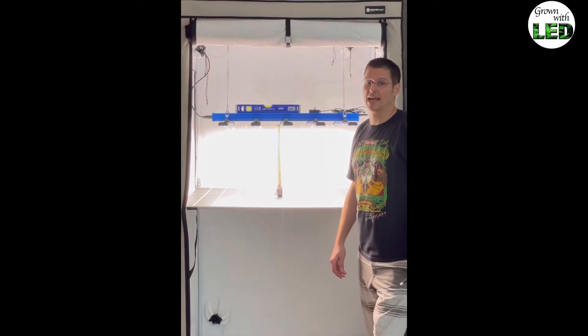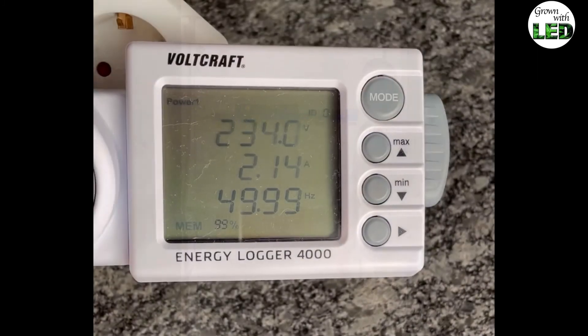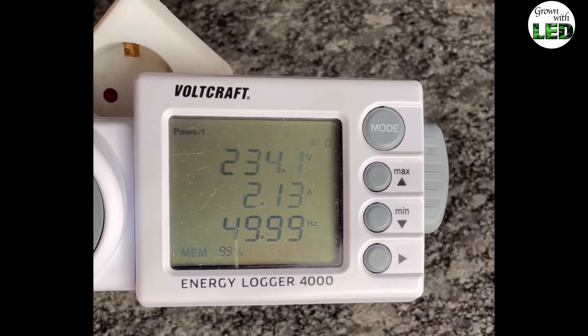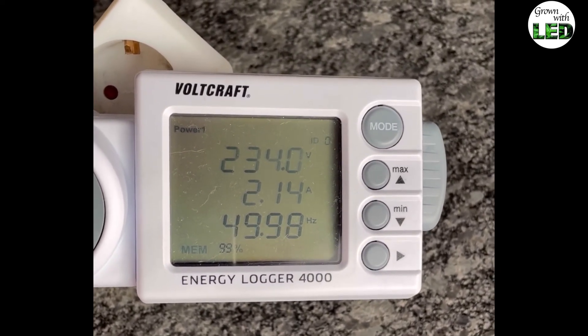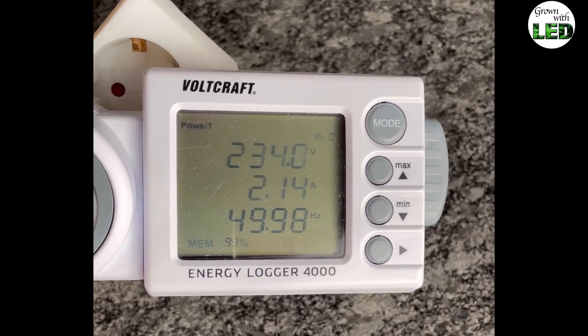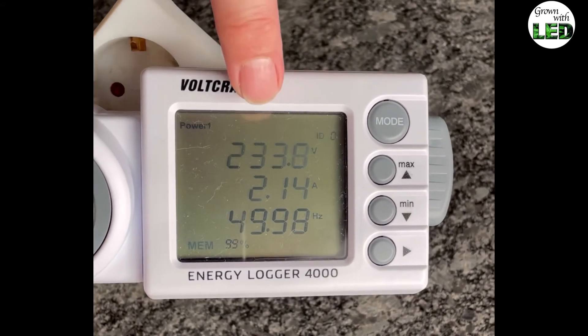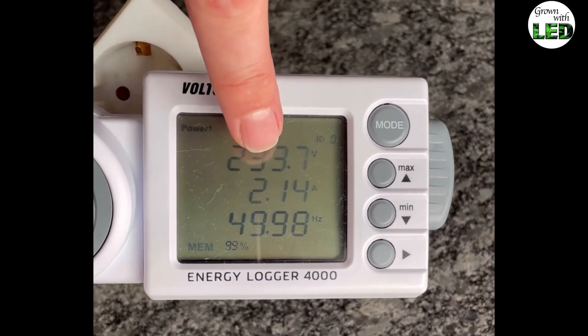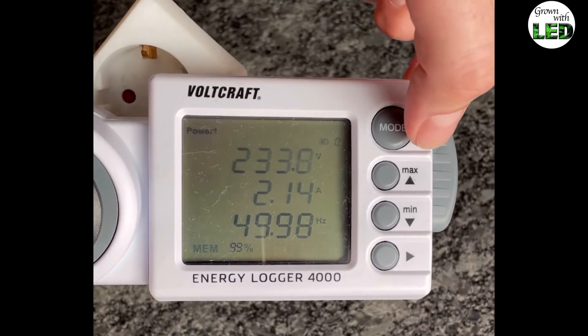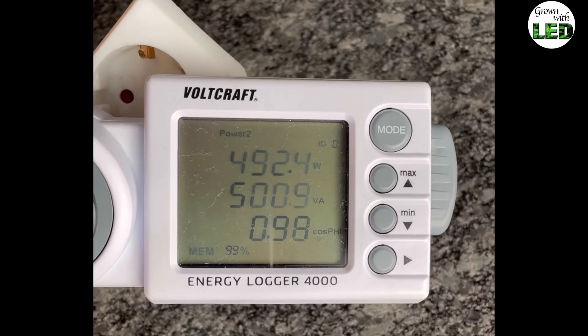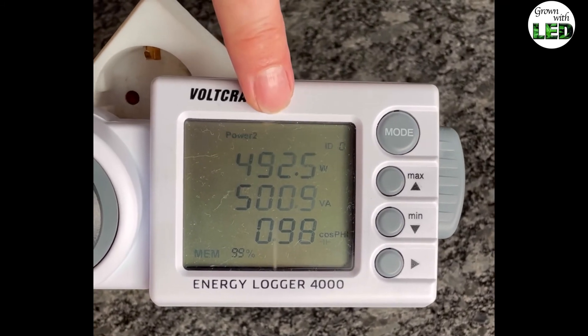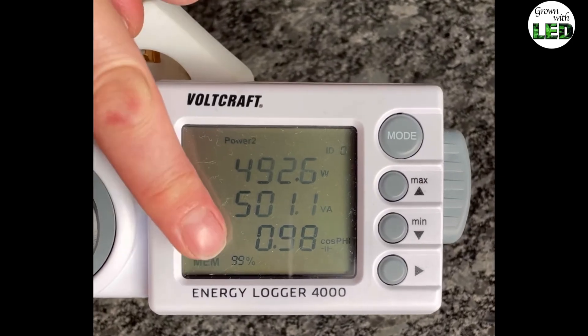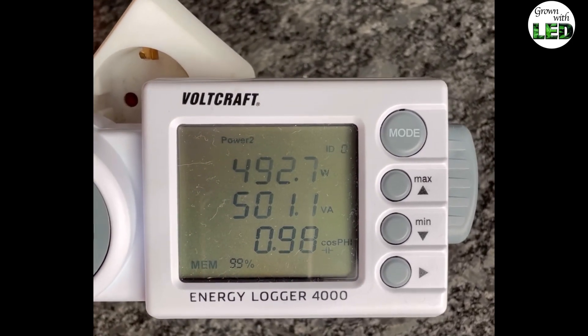Here we have the power measurement of the actual power consumption of the MaxiBright Daylight LED 480 Watt Pro. At a voltage of 233.9 volts, she draws a current of 2.14 amps and therefore uses a power of 492.5 watts. That's 501 Watt pairs with a power factor of 0.98.